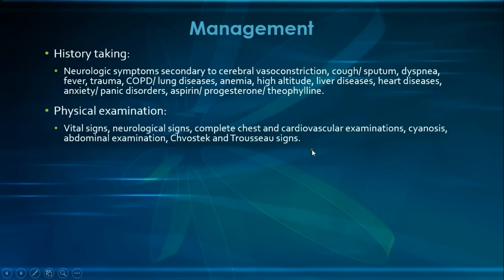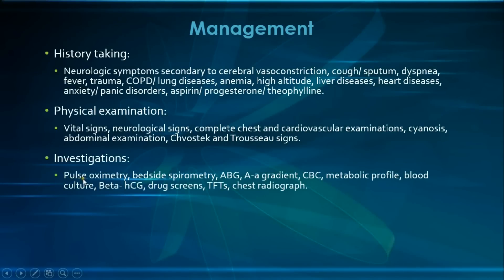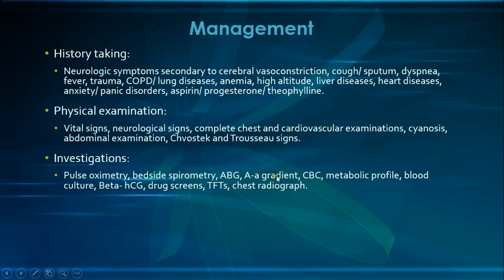Now with the investigations. We begin with the quickest investigation, which is pulse oximetry, looking for hypoxemia. We would also perform bedside spirometry to have a general idea about pulmonary function. Then we collect an arterial blood specimen, performing an ABG — arterial blood gases — to look at the pH and for any ongoing compensation. We would also measure the A-a gradient if the patient has hypoxemia, as it helps in differentiating different types of hypoxemia.